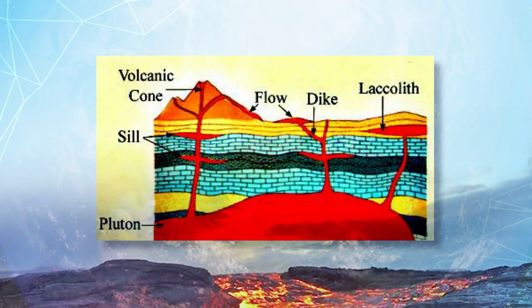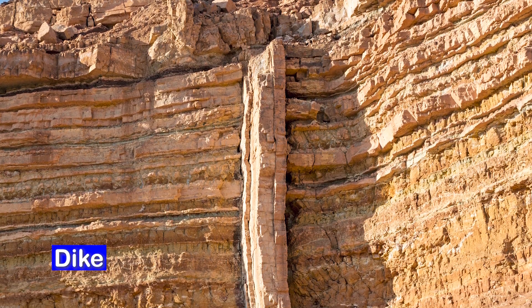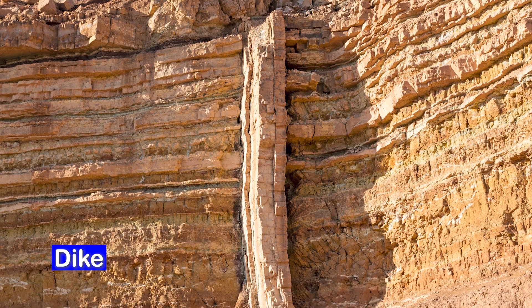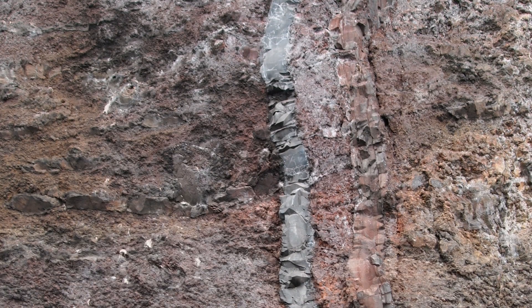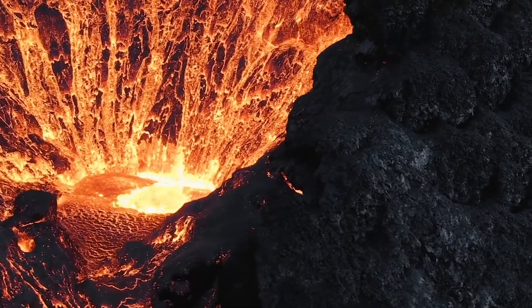The fourth and last type of intrusive form is a dyke. When lava makes its way through cracks and fissures developed in the land, it solidifies almost perpendicular to the ground, cooling in the same position to develop a wall-like structure. Such structures are called dykes. Dykes are the most commonly found intrusive forms in the western Maharashtra area of India.